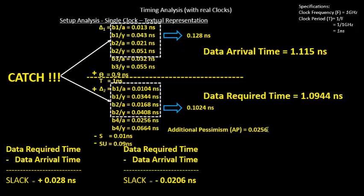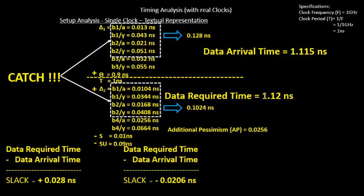Adding 25.6 ps to the data required time gives a new value of 1.12 nanoseconds. Now the data arrival time clock network delay is 128 ps, and the data required time clock network delay is 102.4 plus 25.6 ps, which is also 128 ps. The common clock path is now balanced, and the pessimism has been added to the data required time.